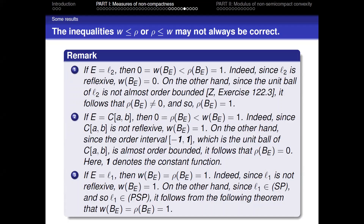Let us discuss this situation. The inequalities ω ≤ ρ or ρ ≤ ω may not always be correct. For example, if E = L², then w(B_E) = 0 is strictly less than ρ(B_E) = 1. Indeed, since L² is reflexive, ω(B_E) = 0; but since the unit ball of L² is not almost order bounded, ρ(B_E) is nonzero and hence equals 1.